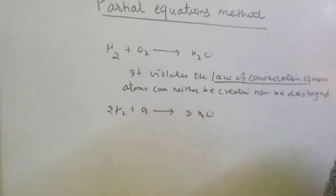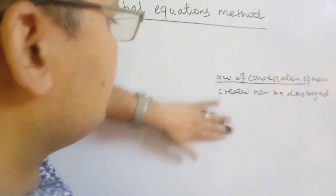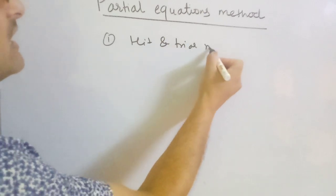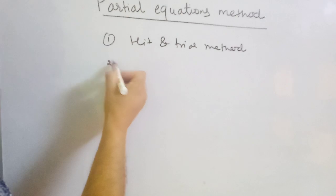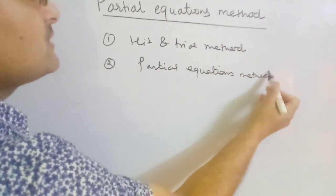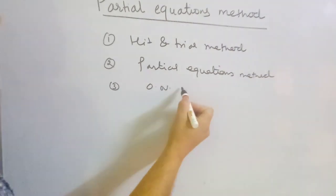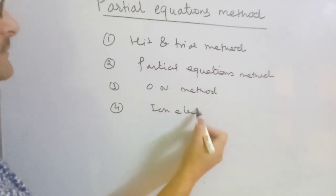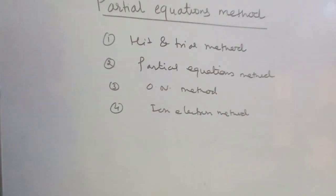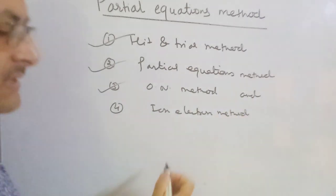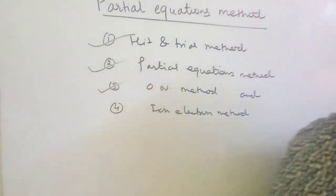While balancing chemical reactions, there are a number of methods available. Some popular reaction balancing methods are: number one, hit and trial method; number two, partial equations method; number three, oxidation number method (O-N method); and number four, ion-electron method. Today I am going to talk about the partial equations method.